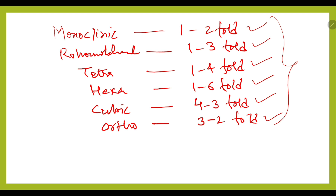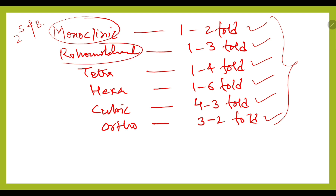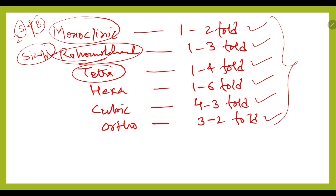Now discussing how many Bravais lattices are associated with the seven crystal systems. For monoclinic, there are two: simple monoclinic and base-centered monoclinic. For rhombohedral, there is only one: simple. For tetragonal, there are two: simple tetragonal and base-centered (end-centered) tetragonal.